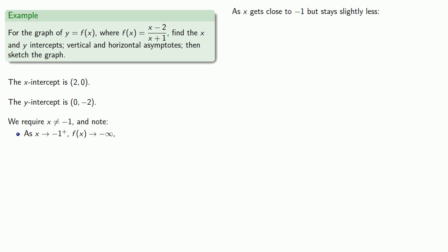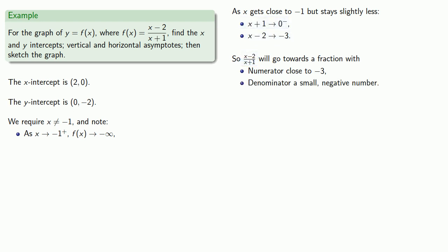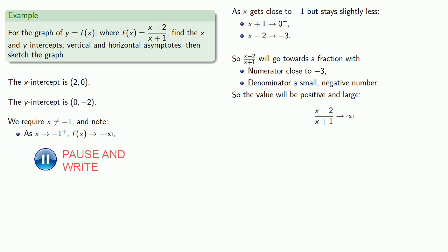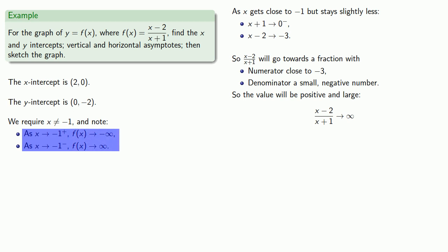On the other side, as x gets close to negative 1 but stays slightly less, x plus 1 goes to 0 but stays a little bit less than 0, and x minus 2 goes towards negative 3. So x minus 2 over x plus 1 goes towards a fraction with numerator close to negative 3 and a small negative denominator, meaning the value is positive and large. So x minus 2 over x plus 1 goes to positive infinity. Since as x goes to negative 1 from either side our function values go to plus or minus infinity, x equals negative 1 is a vertical asymptote.